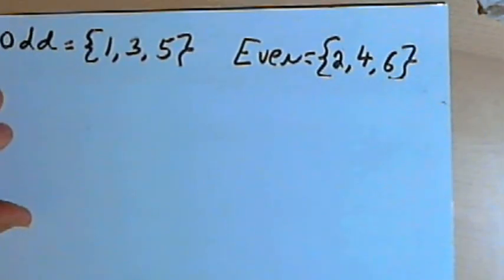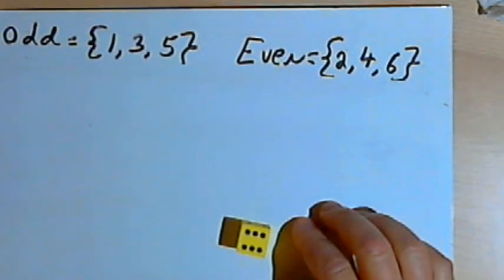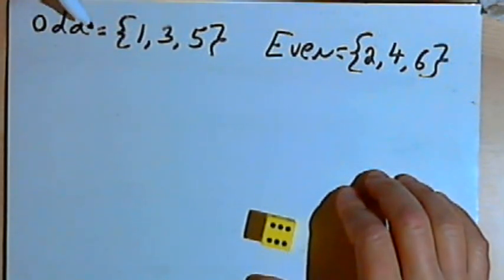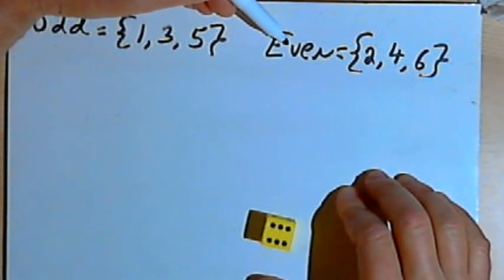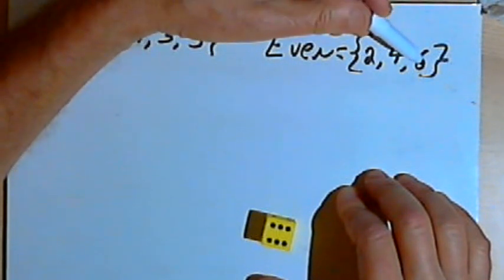So here's how this works. Let's say I've got a die, and I want to think of two possible events that could happen when I throw the die. I might get an odd number, so I might get a 1 or a 3 or a 5, or I might get an even number. I might get a 2 or a 4 or a 6.